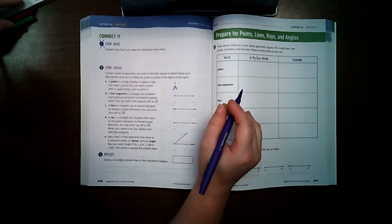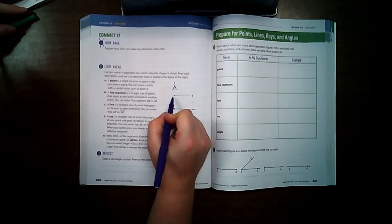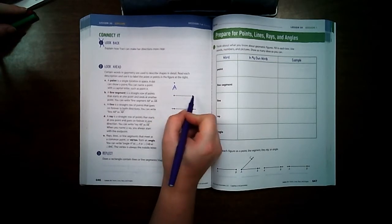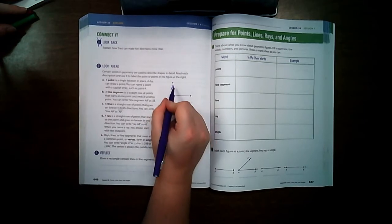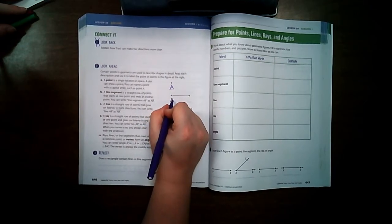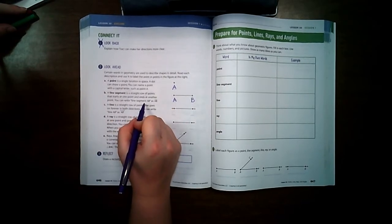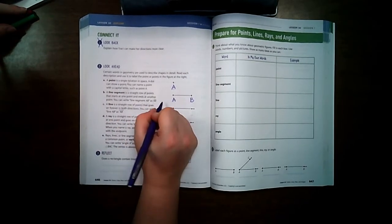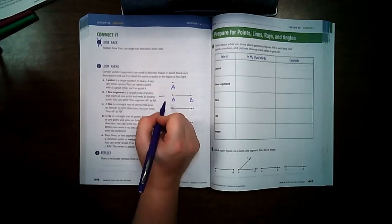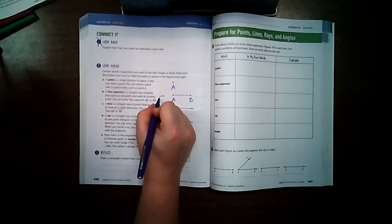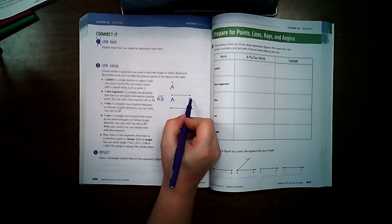A line segment is a straight line with a point on each end, so you would label the points just like we labeled the point up here. I'm going to label these points A and B. To write a line segment, you would write a line like this because that's a segment, and then you would label it AB because you're starting at A and ending at B.